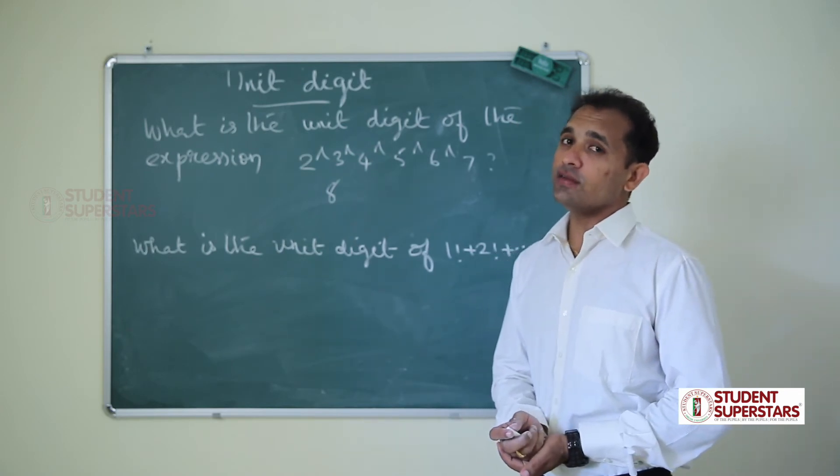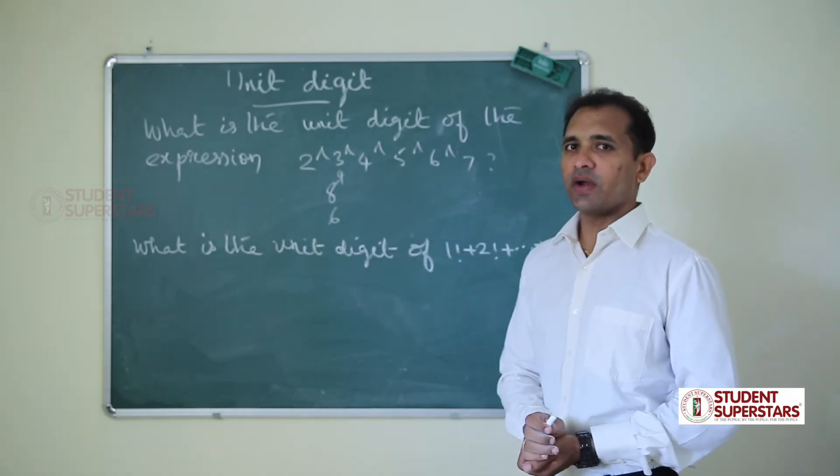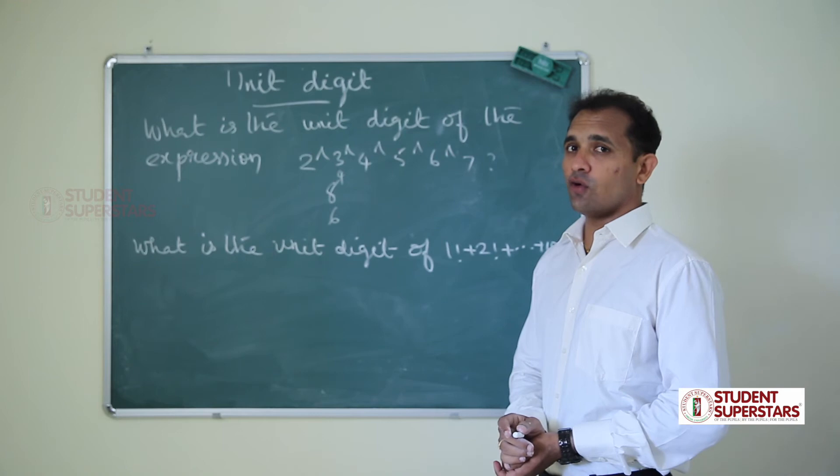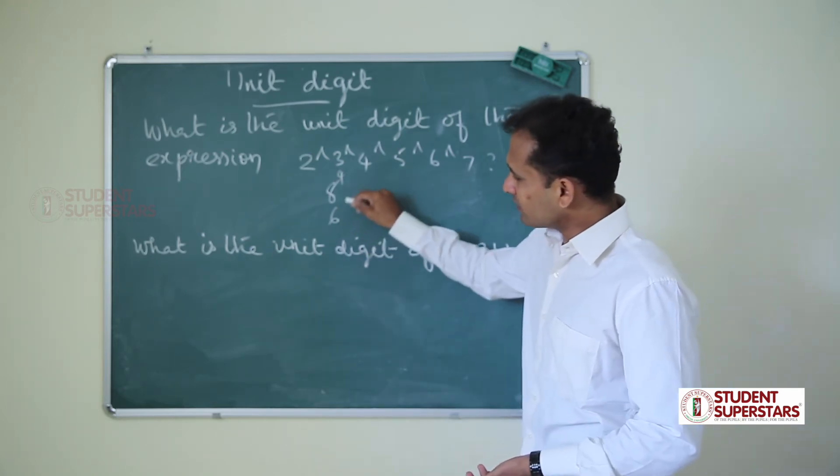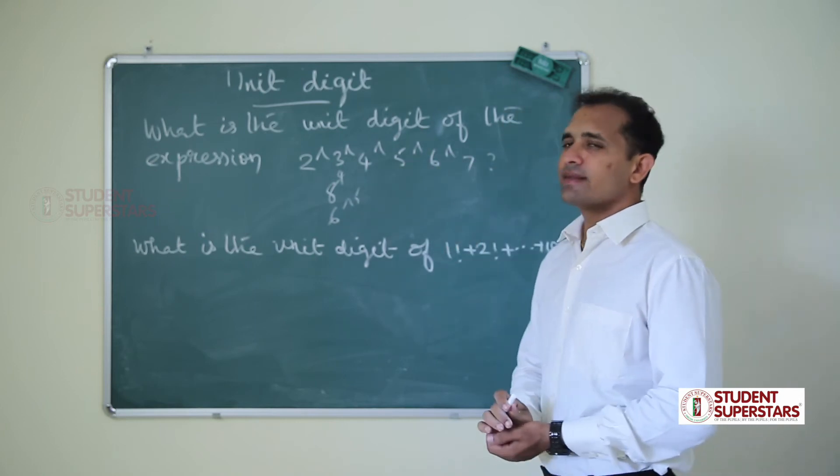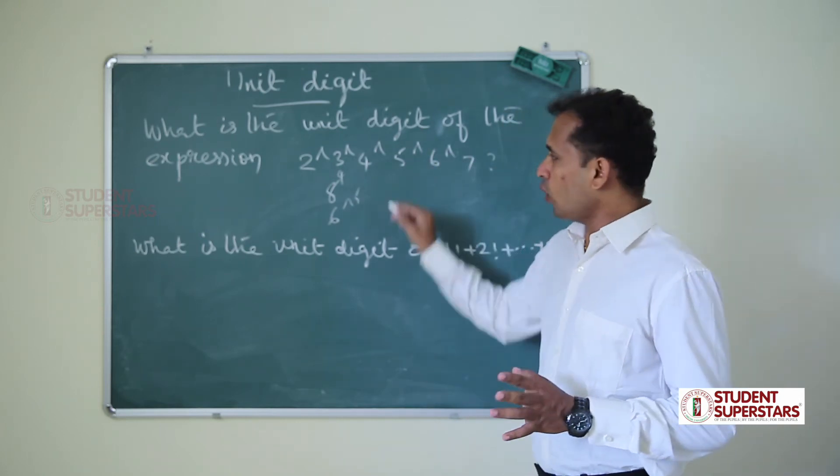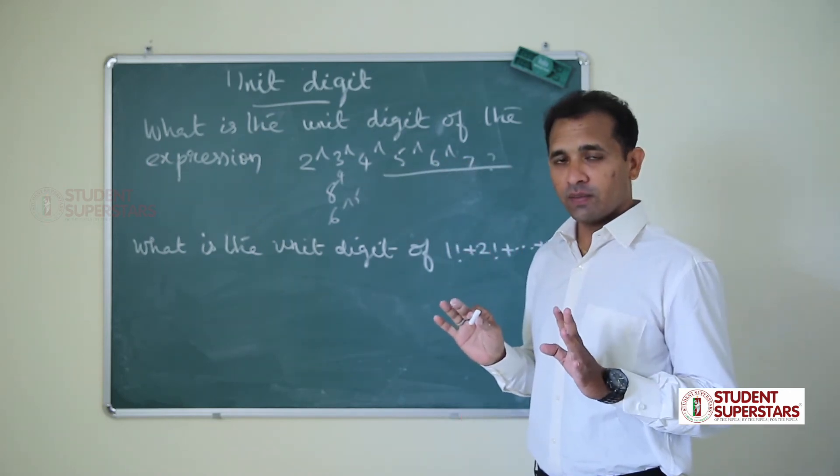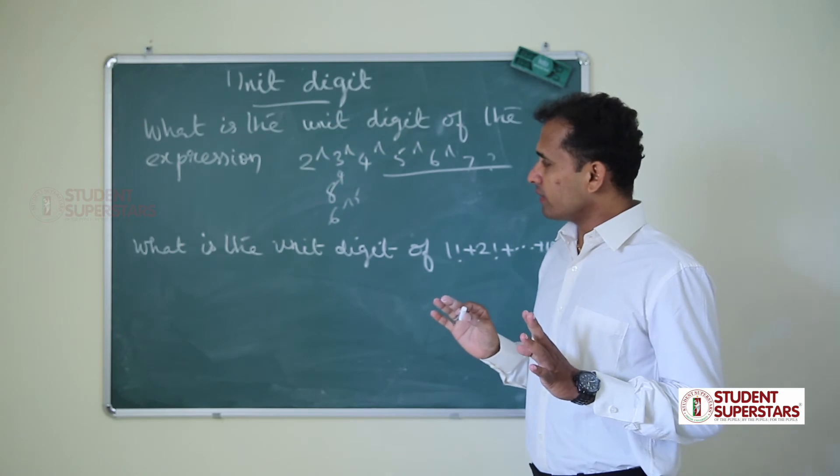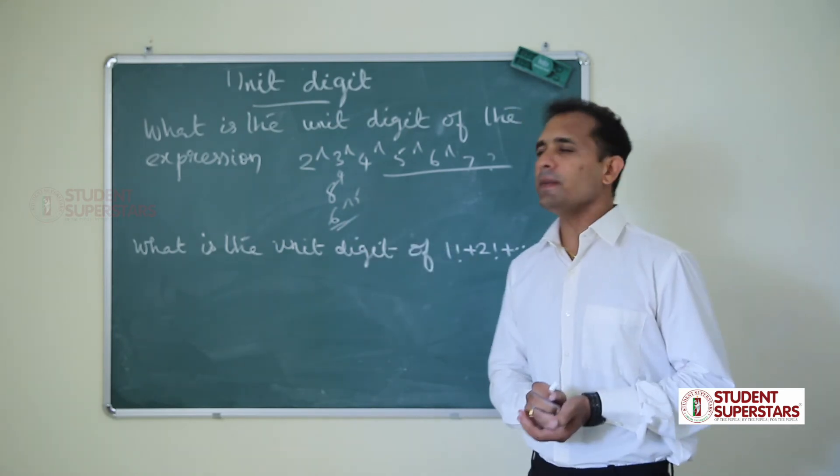8 power 4 is 6. 8 power 4, 64, 4 power 32, 2 power 16, so 6. So 6 power 5. 6 power anything is 6 only. So after this, we don't need to calculate. 6 power anything is 6, so answer is 6.